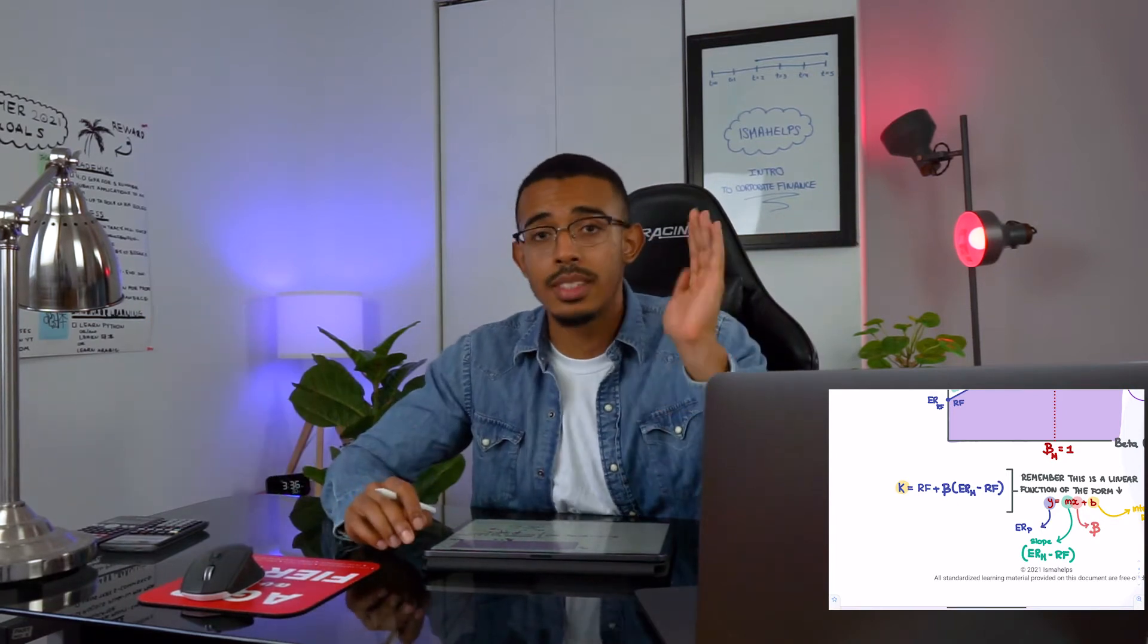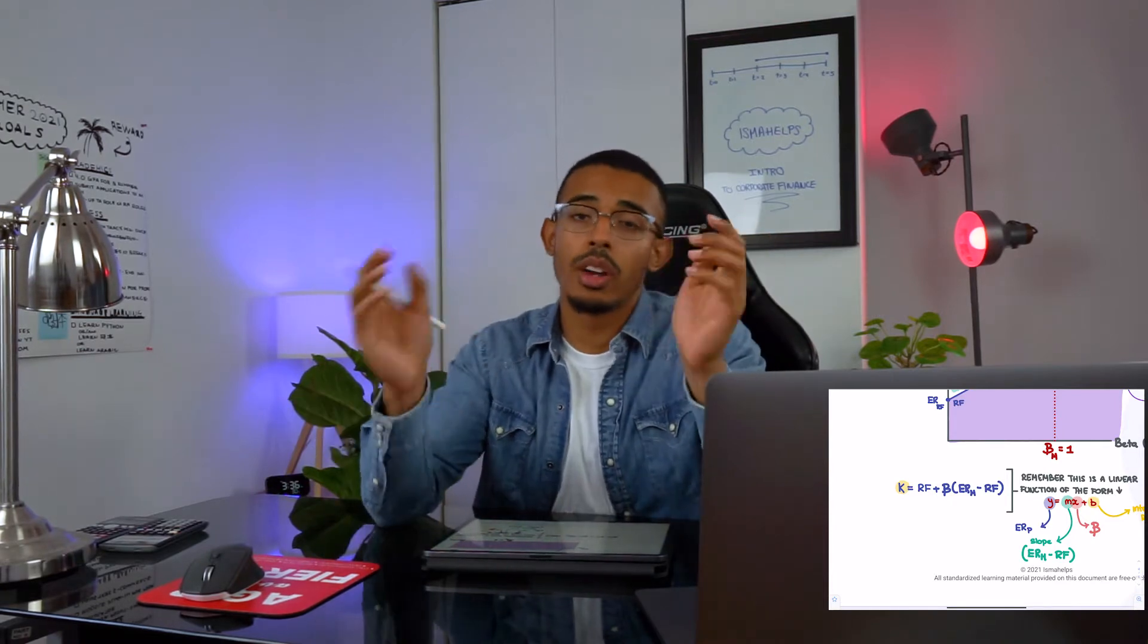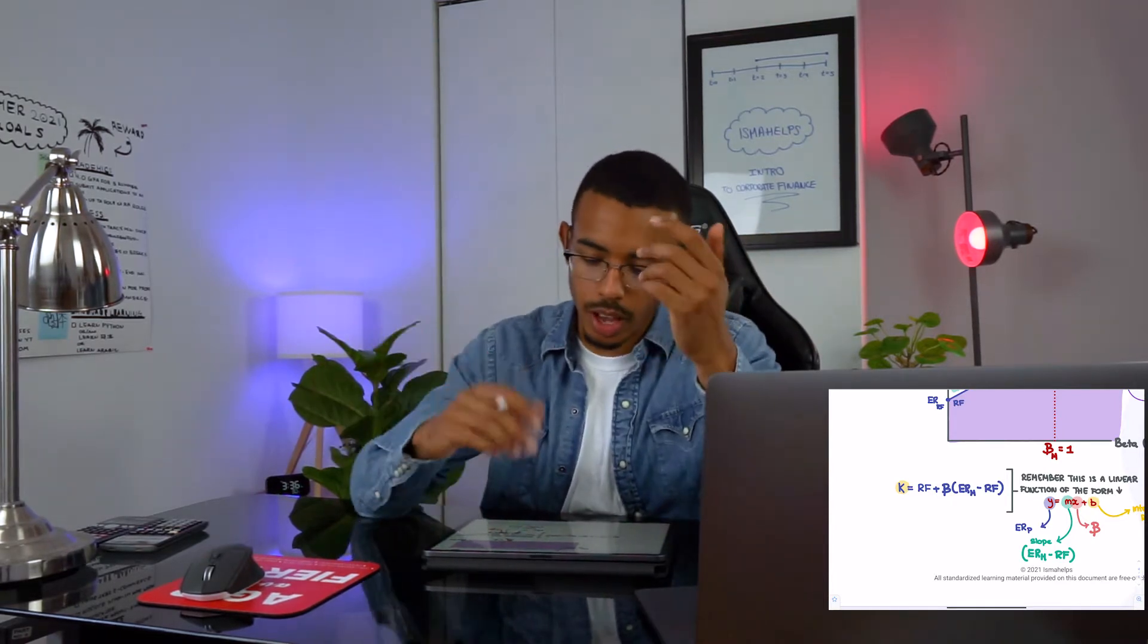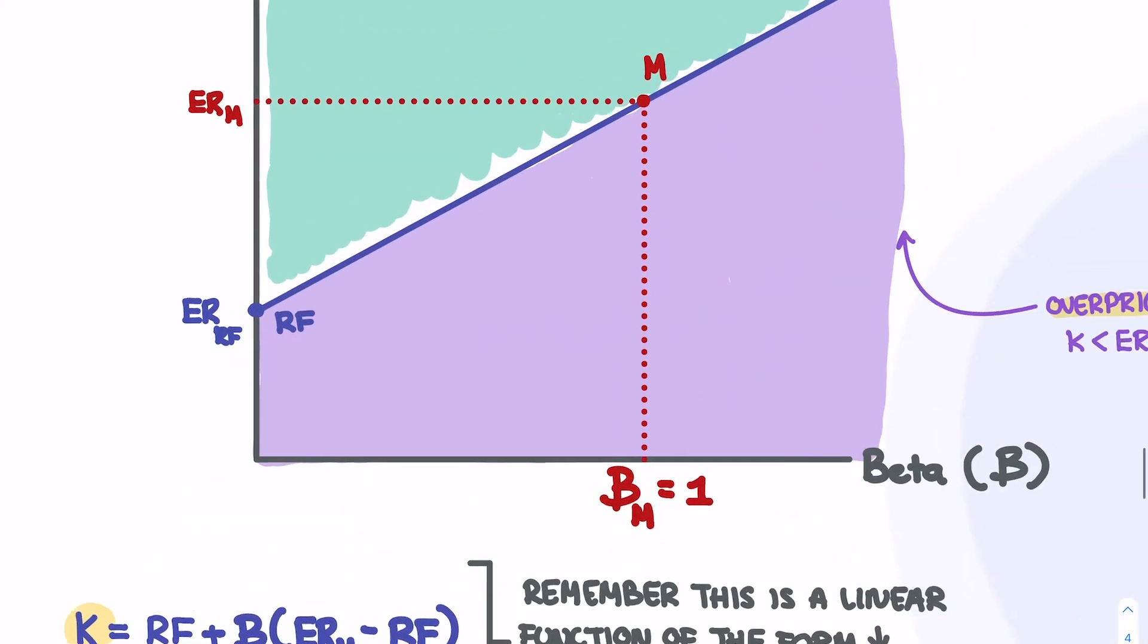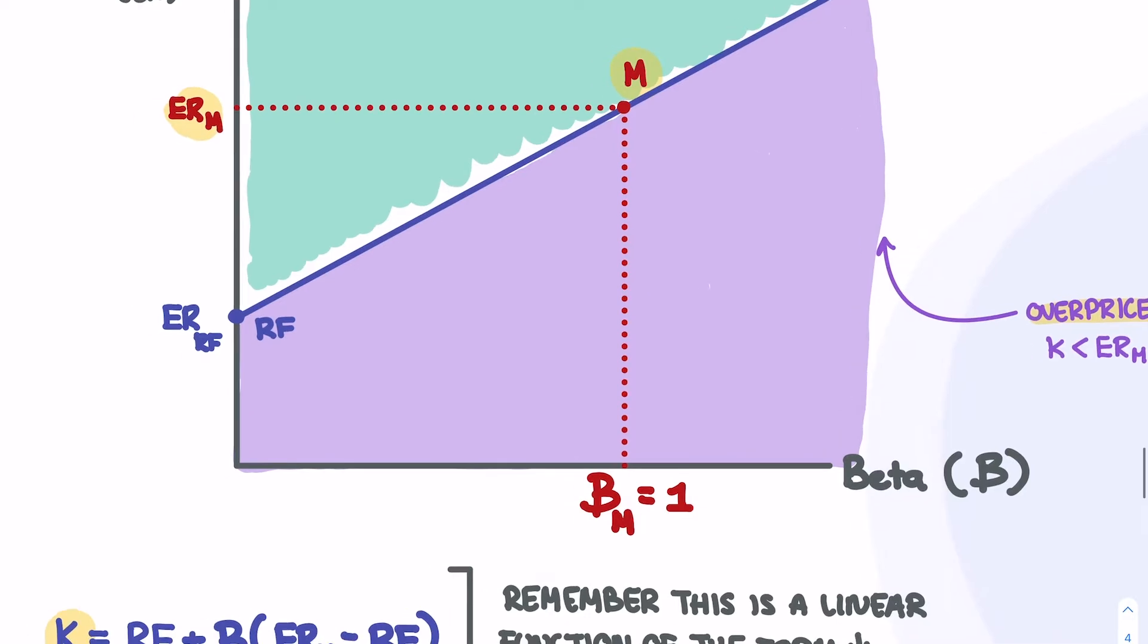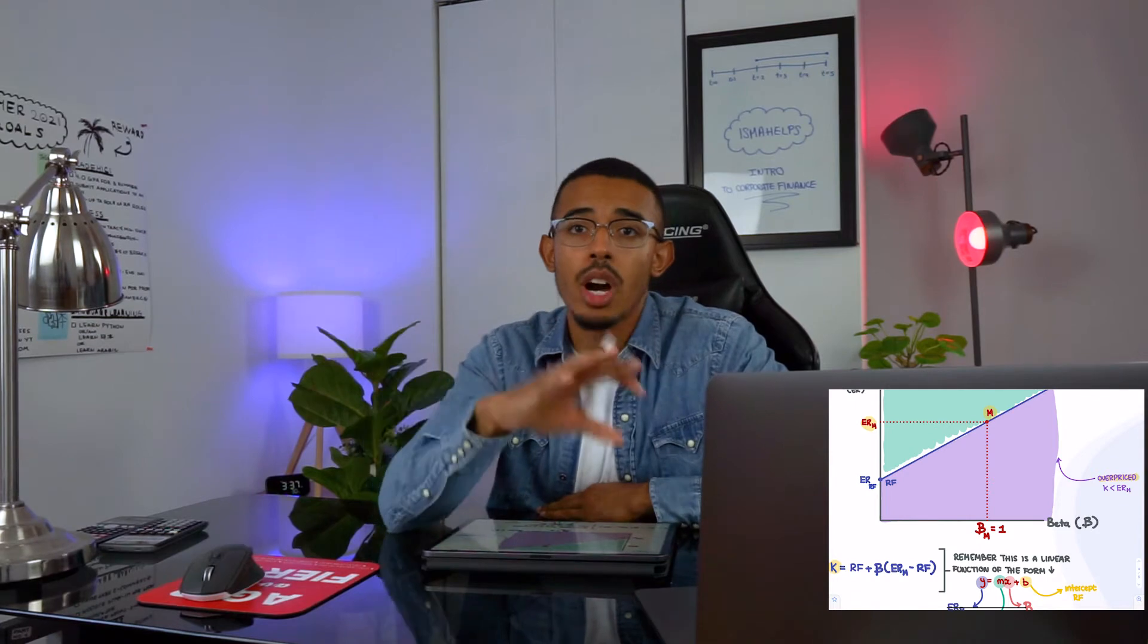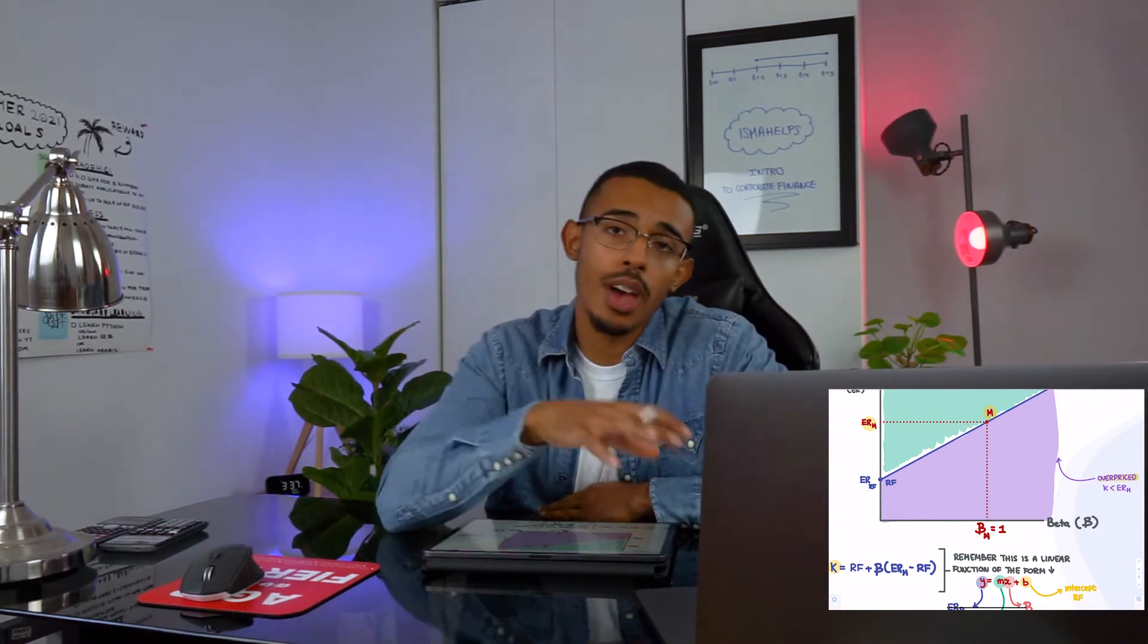It's literally as simple as that. All we have to do is see whether K is equal to our expected return of the market. If you look at your graph, we want to know if K is equal to M, M being the expected return for the market portfolio. Typically under CAPM, we tell you that should be the case.